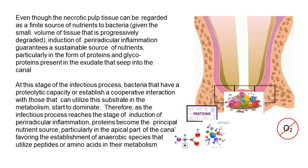In this stage, bacteria with proteolytic capacity establish cooperative interactions with those that utilize the substrate, and this metabolism starts to dominate. As the infectious process induces periradicular inflammation, proteins become the nutrient source, particularly favoring the establishment of anaerobic species in the apical part of the canal that utilize peptides or amino acids for their metabolism.